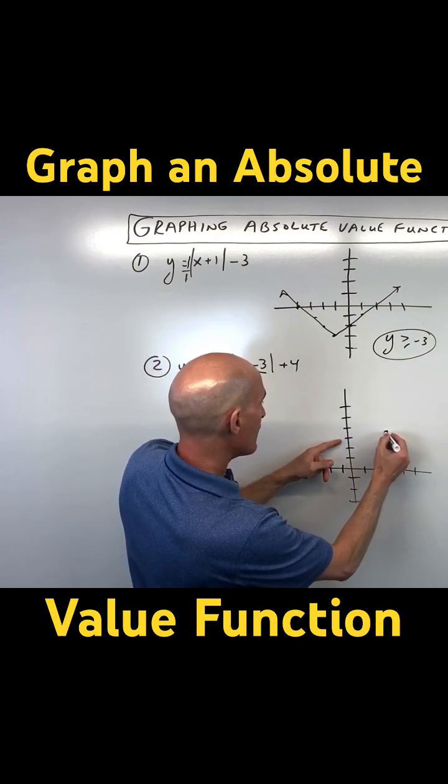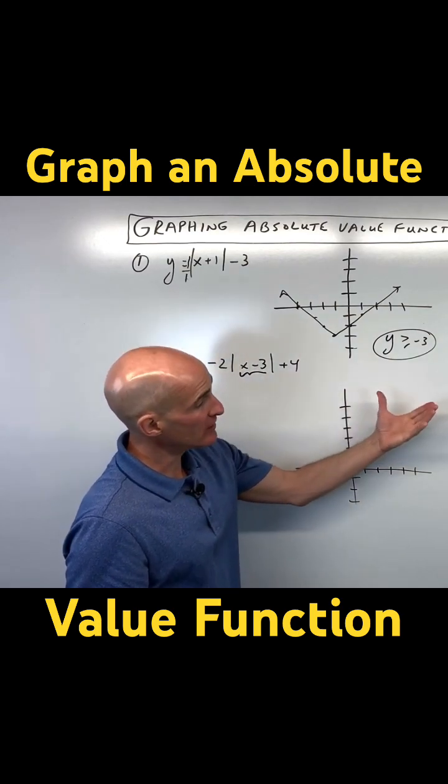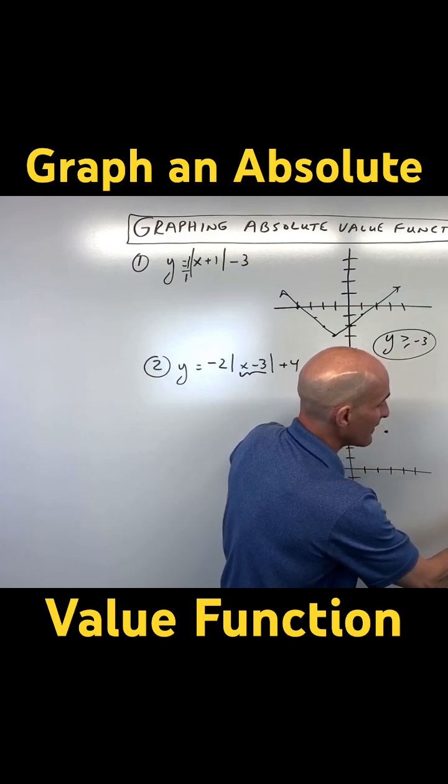1, 2, 3, 4, right about there. That's our vertex. But this a value is negative, so we know that the graph is going to be opening down, something like that.